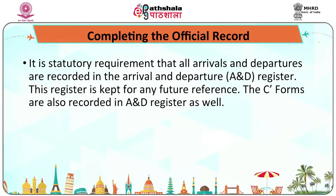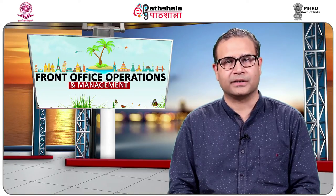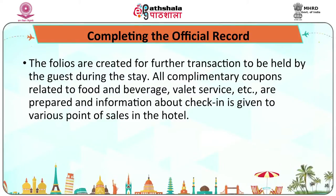Once the guest has been assigned a room and their desires are met, the front office completes all official records as per statutory requirements. All arrivals and departures are recorded in the arrival and departure register, also known as the AND register, which is kept for further reference. C forms are also recorded in the AND register. For all foreigners, the C form must be filled and a copy sent to the local FRO officer, generally within 24 hours. Registration cards are updated in the system or registers, folios are created for further transactions, and complimentary coupons for food and beverage, valet service, etc. are prepared. Check-in information is given to various point-of-sales in the hotel.